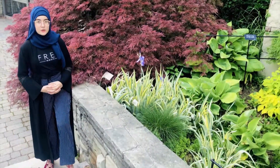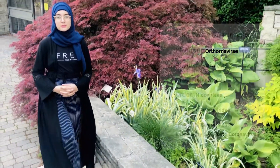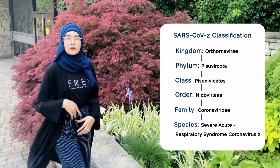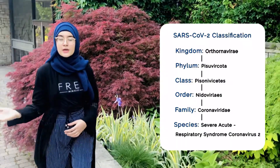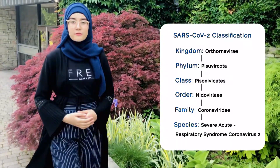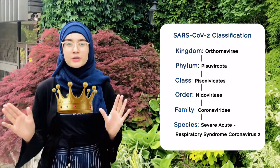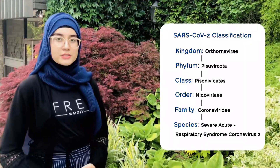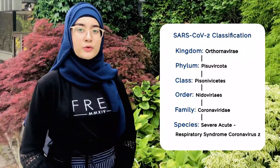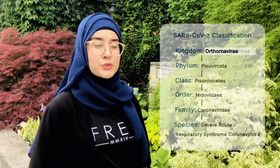SARS-CoV-2 is systematized under the order Nidovirales and the family Coronaviridae, owing to its crown-like appearance. Under the subfamily Orthocoronaviridae due to its positive-sense RNA genome, it belongs to the subgenus Sarbecovirus since the virus targets mammals, most notably humans.